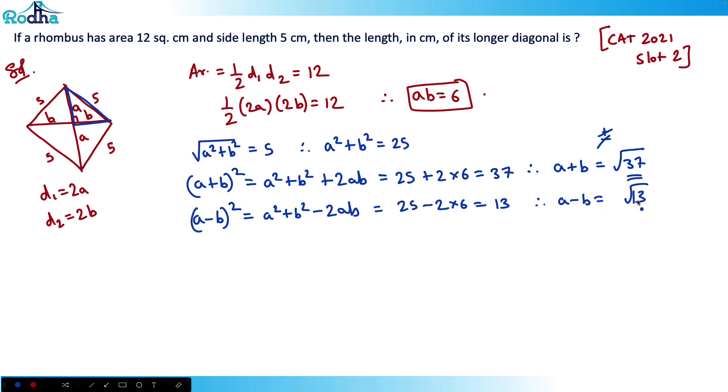I want to find the length of longer diagonal, right? So I should add both the equations. That will give the length of the longer diagonal. If I add both these equations, 2A equals root 37 plus root 13.